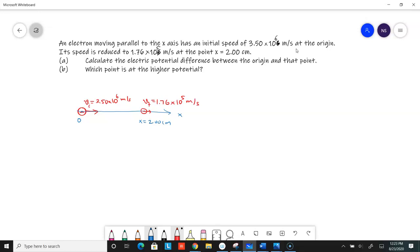Okay, and the question is, calculate the electric potential difference between the origin and this point. So part A, they are asking us for what is the delta V? That means potential at 2 centimeters minus the potential at the origin.